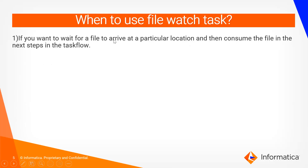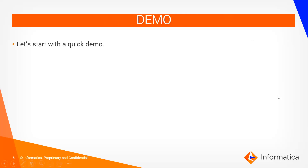When should you use a file watch task? If you want to wait for a file to arrive at a particular location and consume that file in the next step, then you use a file watch task. Previously, we used a file listener at the start of the task — that starts the task flow when an event happens. Here, with a file watch task, you listen mid-flow, consume the file, and proceed to use it in the next steps. Now let's start with a quick demo.